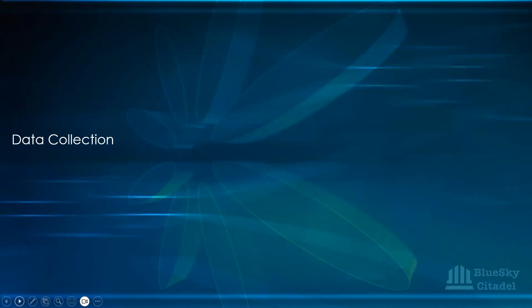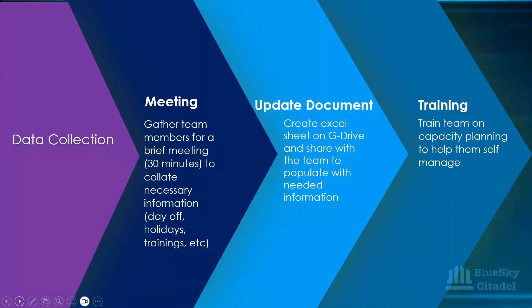How do we collect the data for capacity planning? You gather team members together for a brief meeting — maybe less than 30 minutes — to collate necessary information: who is having a day off, who is going on holiday, who is having a training. You call them in and let them know you're planning capacity for the team and need to know who is taking a full or half day off.